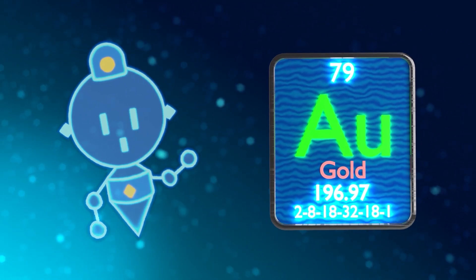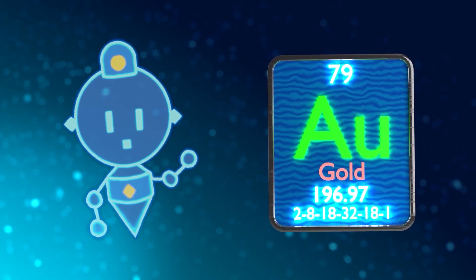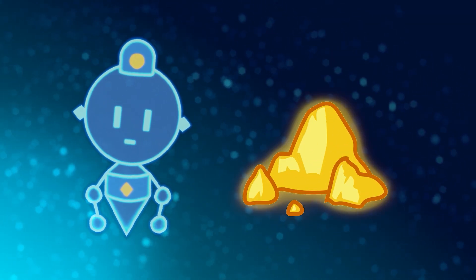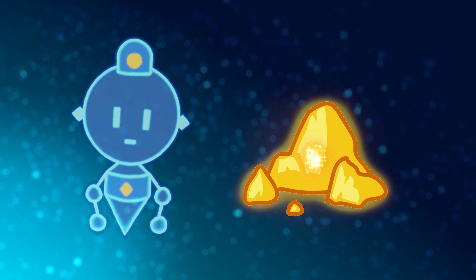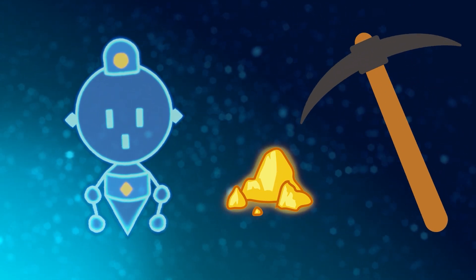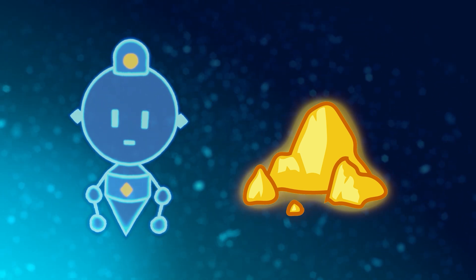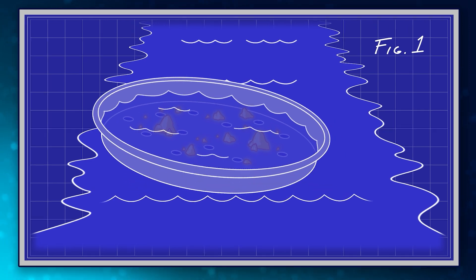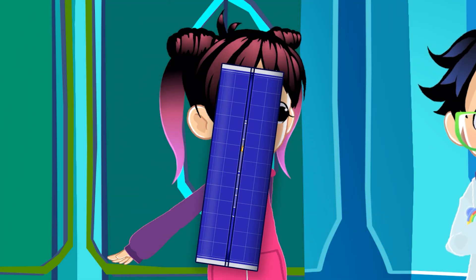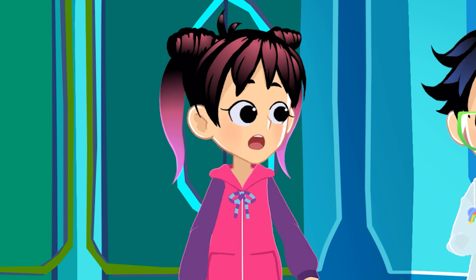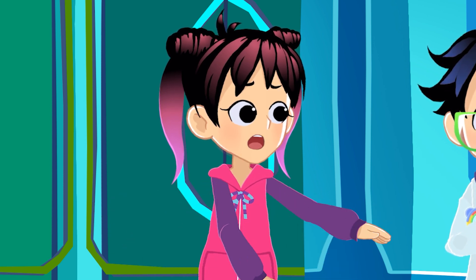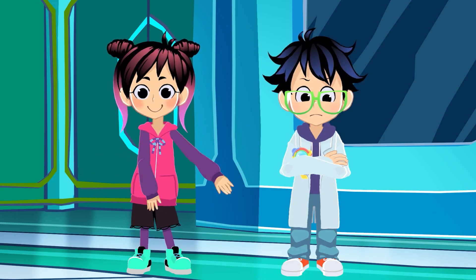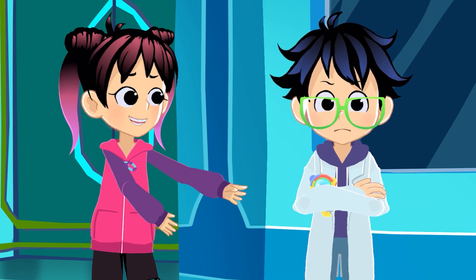Gold! Chemical symbol AU. Classification: Transition Metal. Atomic number: 79. Gold has long been considered valuable because of its lustrous color, its near indestructibility, and the fact that it appears in nature in mostly pure form. Meaning you can pull it out of a riverbed as is and basically strike it rich. Or you can win a gold medal for your awesome, totally on-trend dance moves! That's correct, Ella. At least somebody is supportive around here.